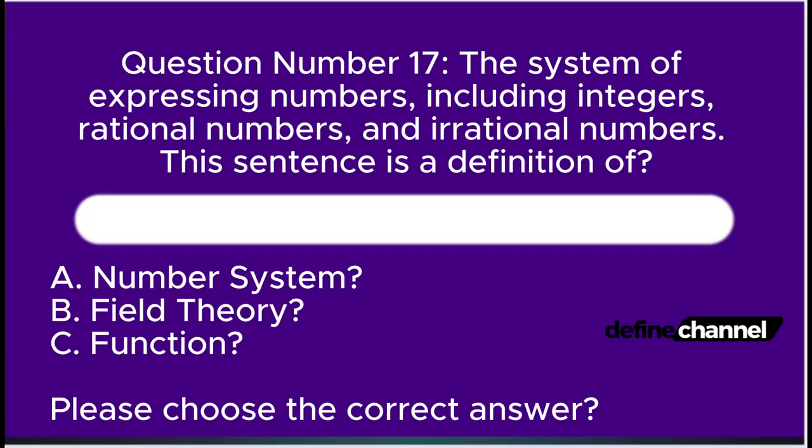Question number seventeen. The system of numbers, including integers, rational numbers, and irrational numbers. This sentence is a definition of: A. Number system, B. Field theory, C. Function. Please choose the correct answer.